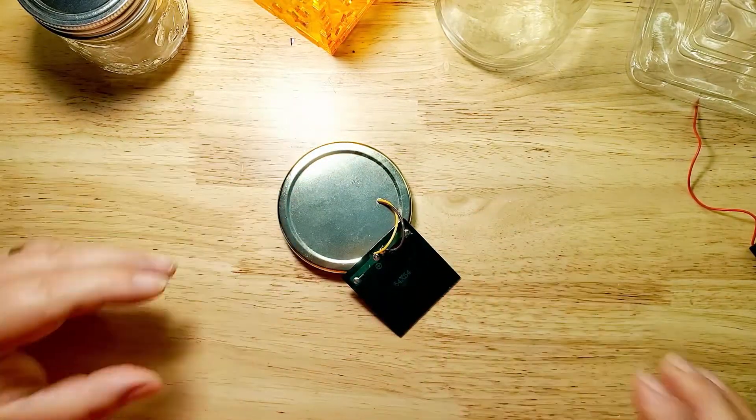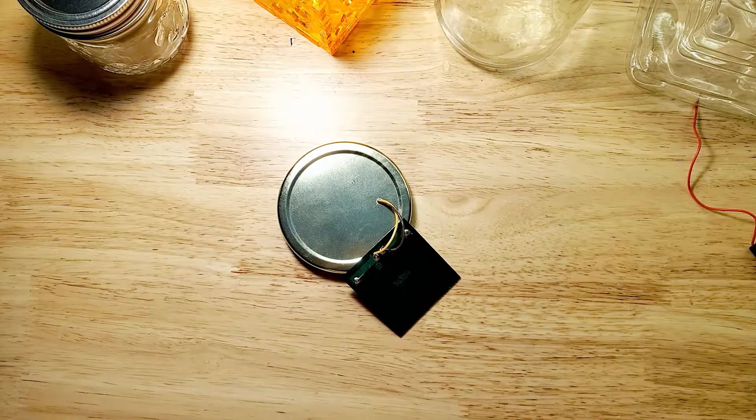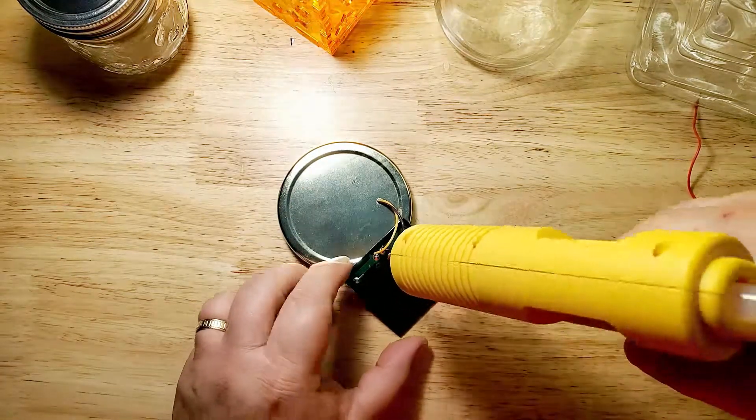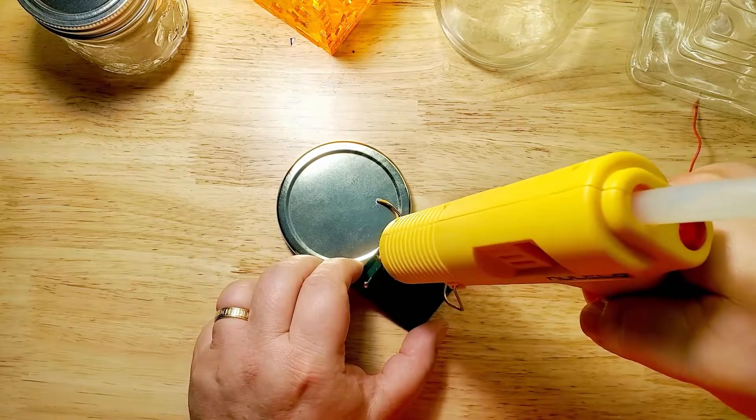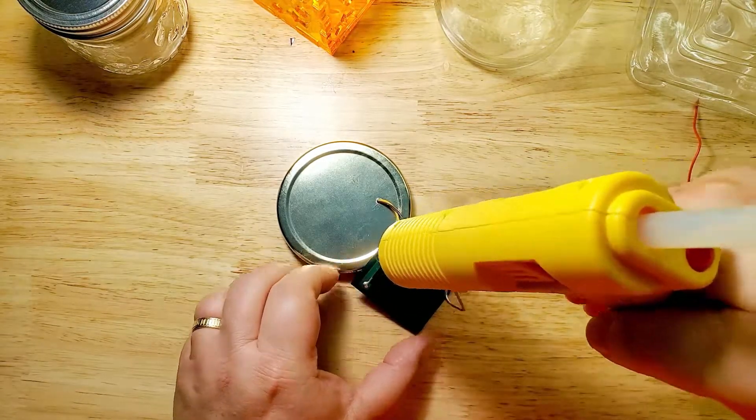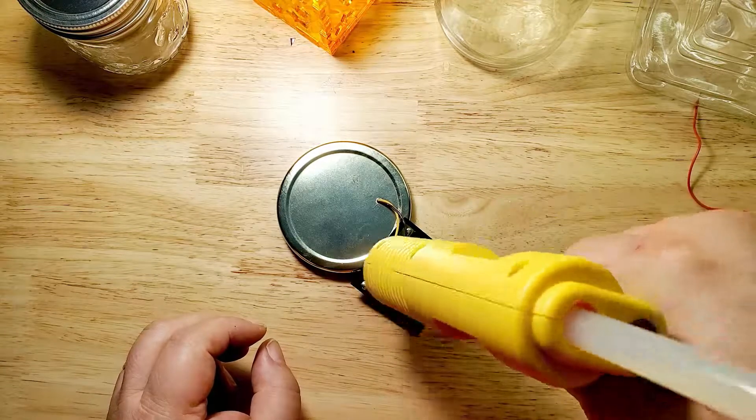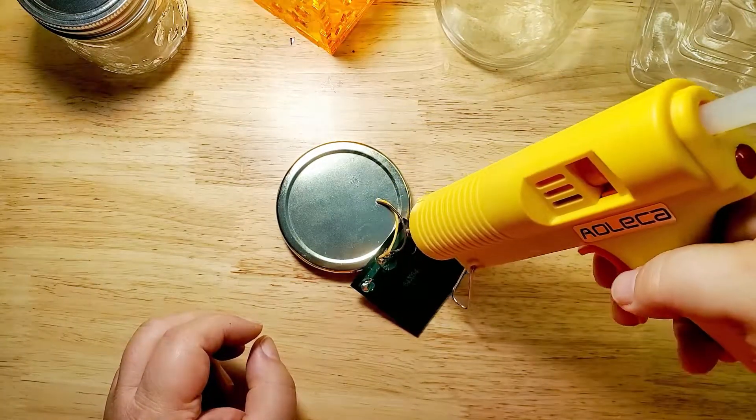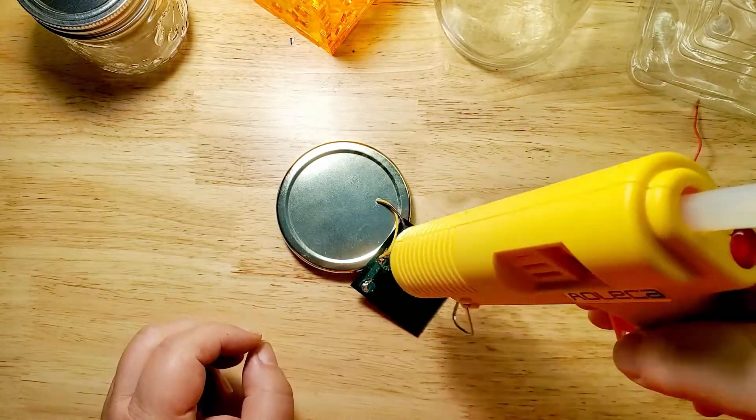I am using hot glue here to show you the areas that you should cover, but you are far better off using silicone or epoxy. I am providing some strain relief for the wires and covering the contacts so they don't short out against the lid.